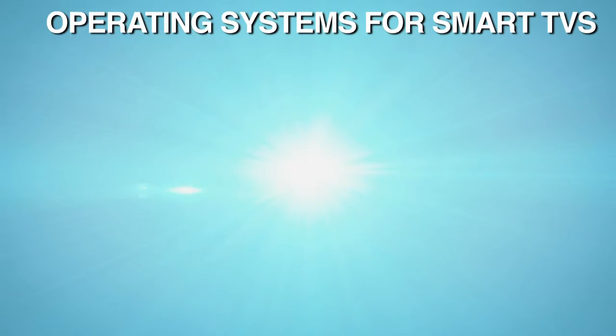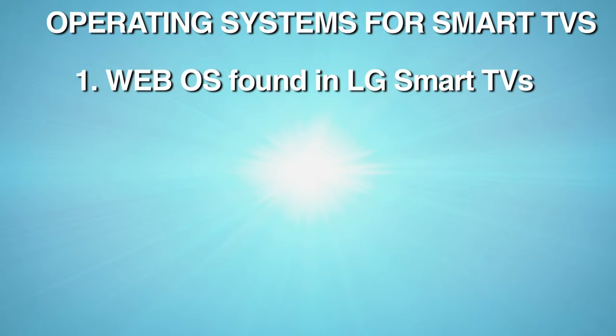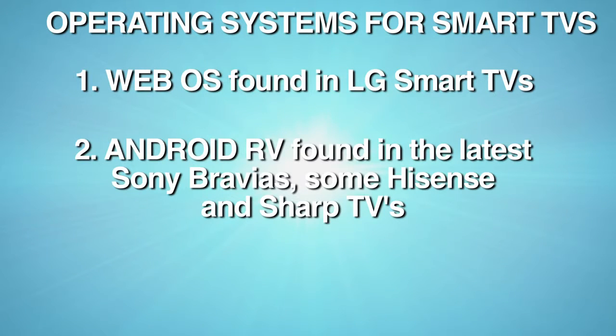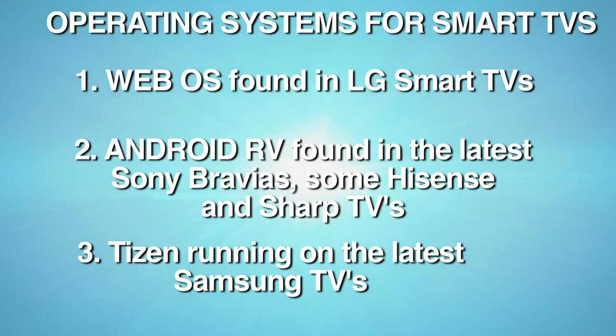For TVs, we have WebOS, which runs on LG televisions. We also have the Android TV operating system, which runs on the latest Sony Bravias, some Hisense, and Sharp TVs. And then we have Tizen, which runs on the latest Samsung TVs. The operating system you use is going to determine the downloaded applications that you're going to have on your smart TV.